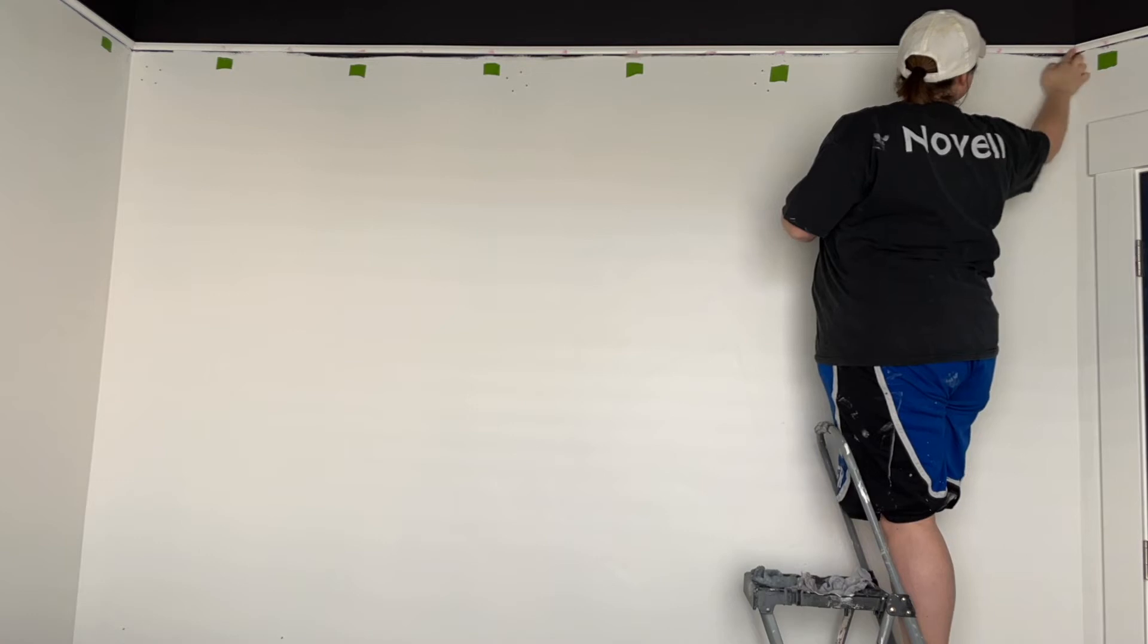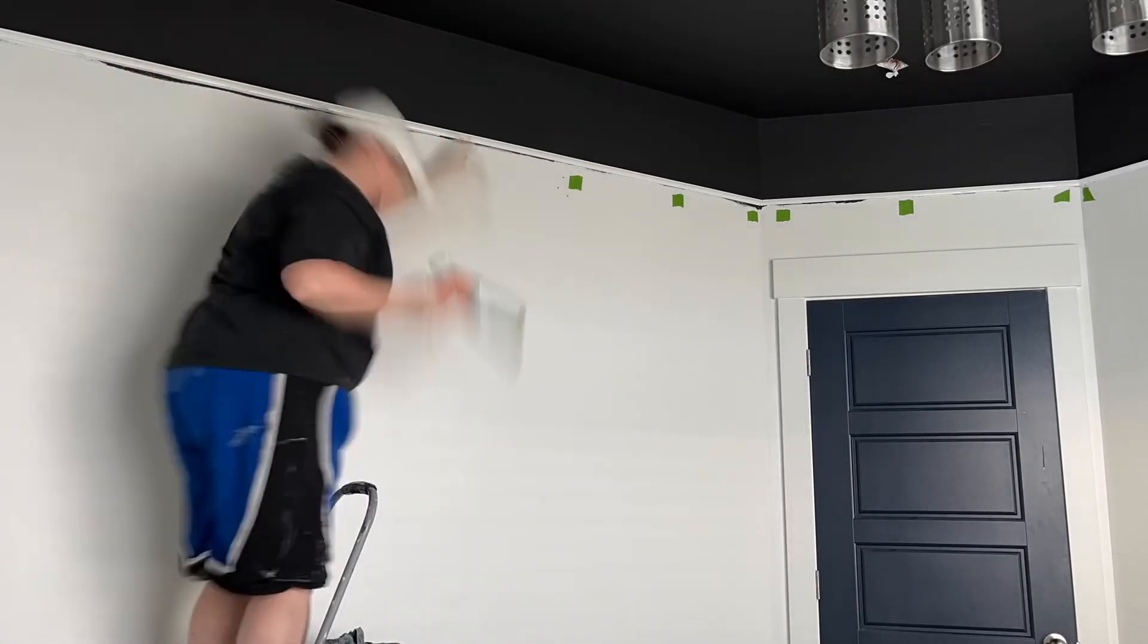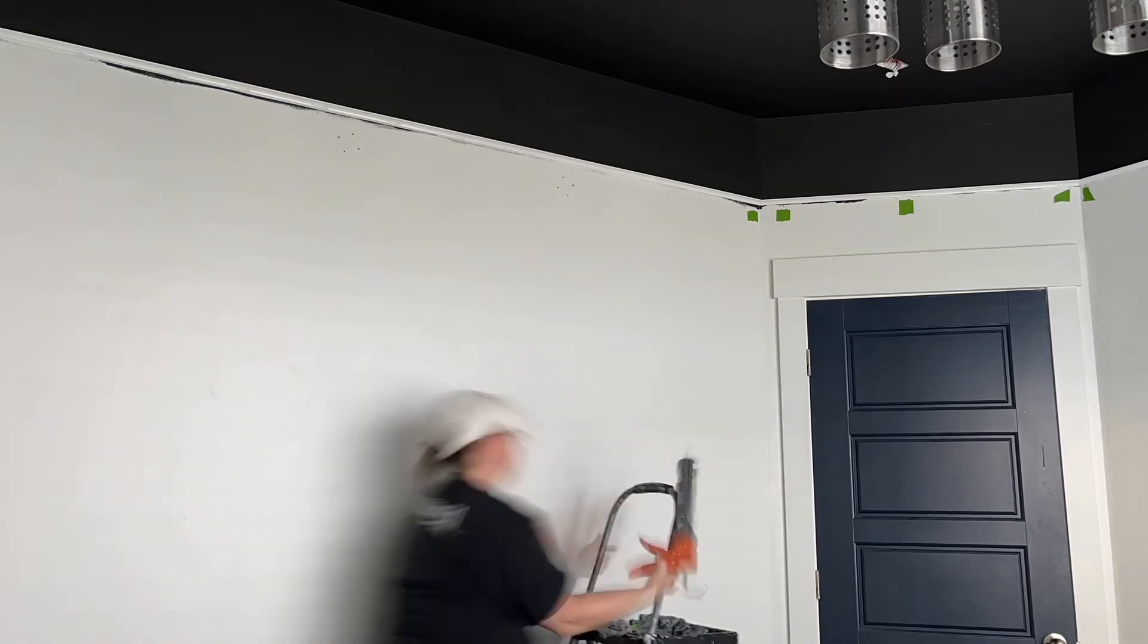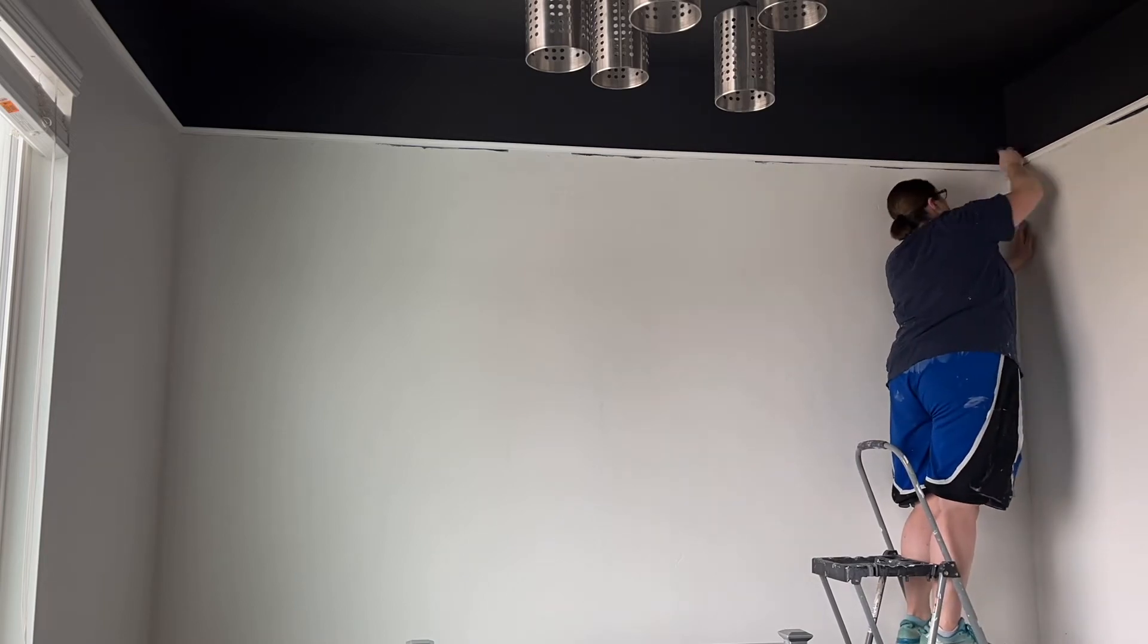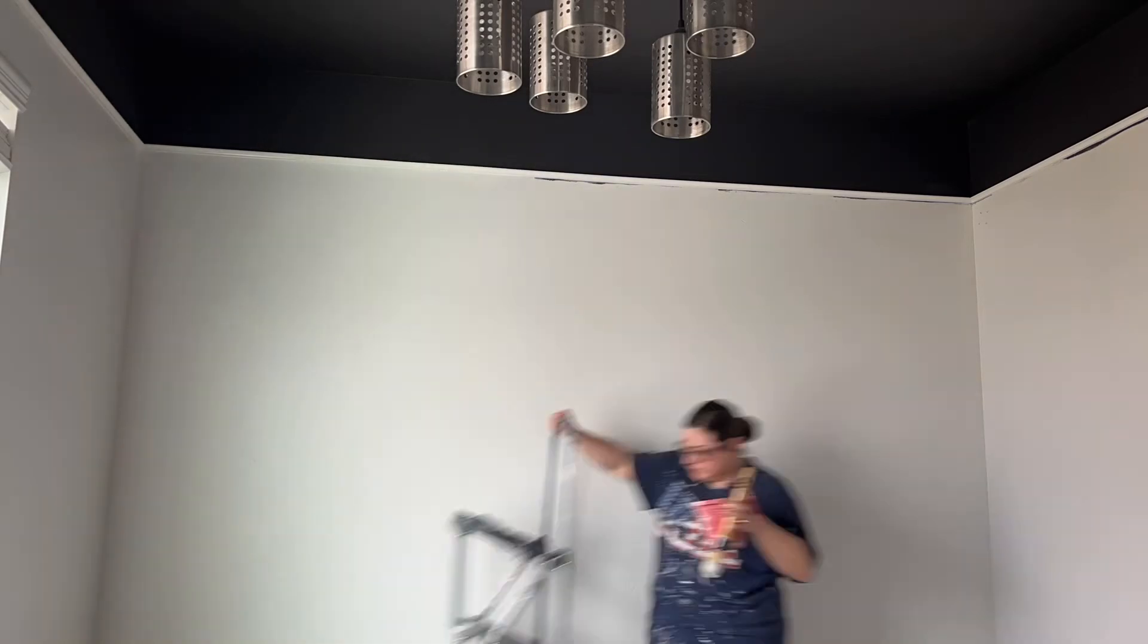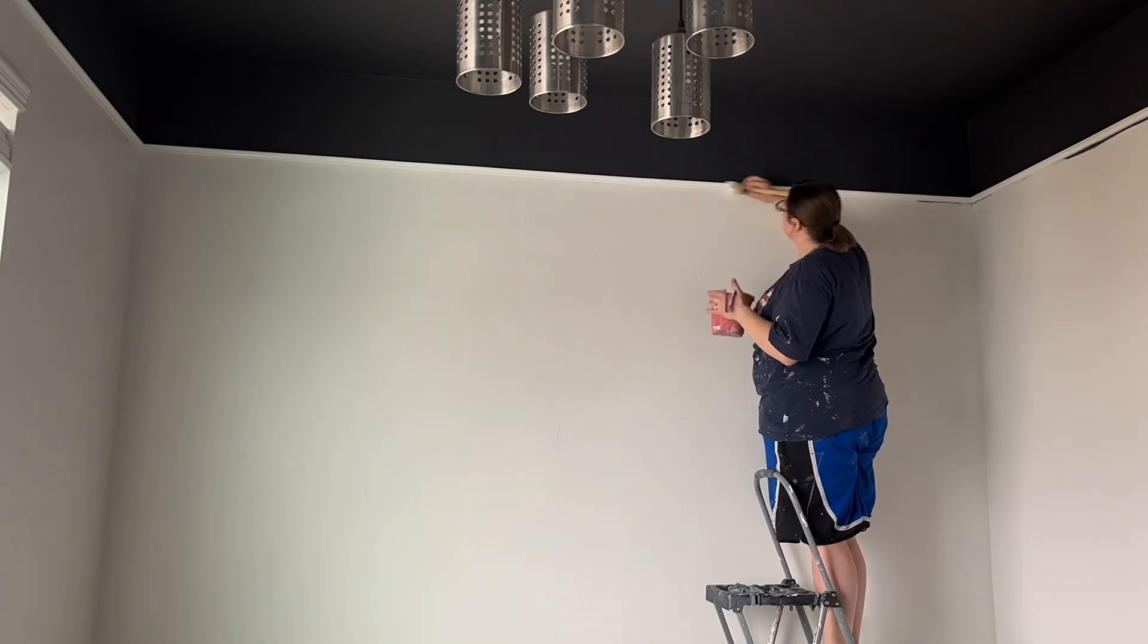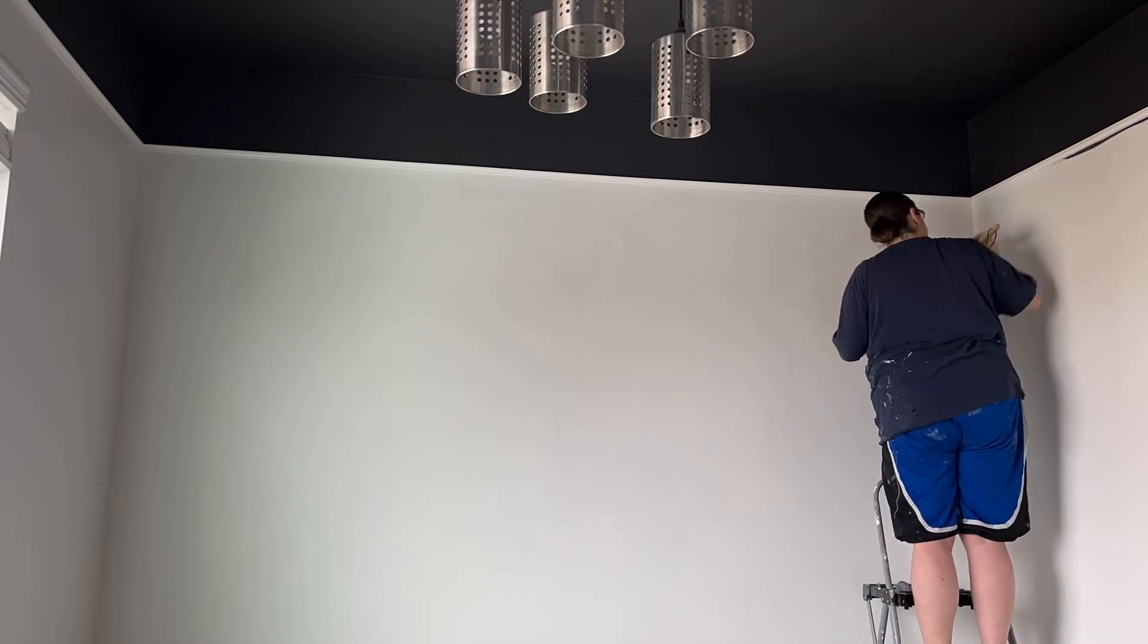After all the cove molding has been installed fill in the nail holes with a little bit of putty and caulk the seams in the corners and underneath the molding. You won't need to worry about the top edge because it's so high up nobody will ever see it. Then you'll lightly sand the putty once dry and wipe the dust away with a damp cloth. Now do a little touch up with paint to get that nice finished look. It took 2 coats to completely cover the spots with black. And here we have the finished look.